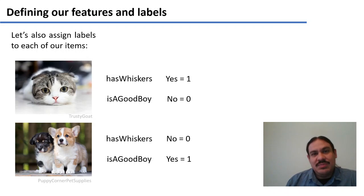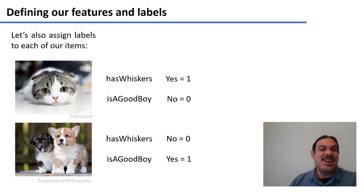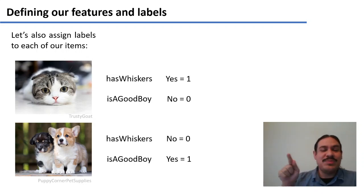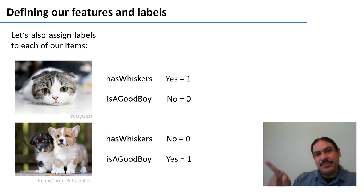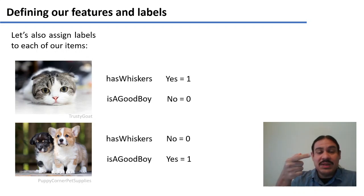When we define our feature system, we need to figure out the values of the features for each of our inputs. For example, the kitten has whiskers, so whiskers equals 1, and it is not a good boy, so is a good boy equals 0. The feature values for the kitten are 1, 0. For the puppy, it does not have whiskers (0) but has a 1 for is a good boy. So for the puppy, the features are 0, 1.